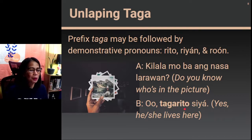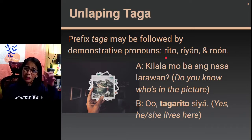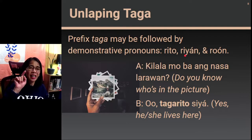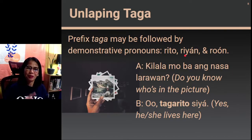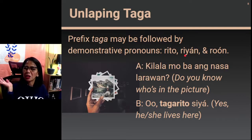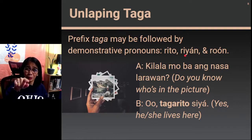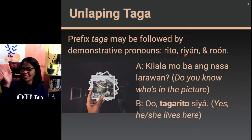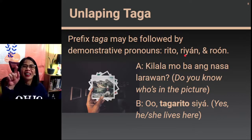Taga rito siya — rito is the demonstrative pronoun meaning here. Taga rian means he or she lives there (near you, second person). Taga roon refers to a third location — not here, not there where you are, but over there in another place. So: taga rito, taga rian, taga roon.